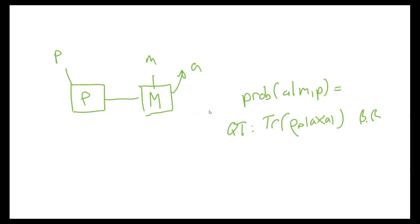This whole setup has associated to it a probability of obtaining outcome A, given the input choices M and P. In quantum theory, this probability is calculated using the Born rule. We take the trace of the density operator corresponding to the preparation, and the projector corresponding to the outcome in the case of a projective measurement.